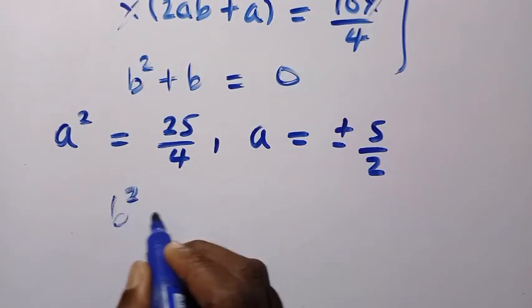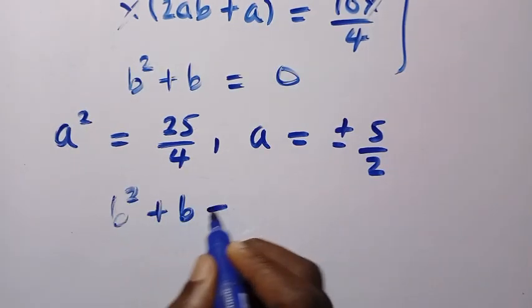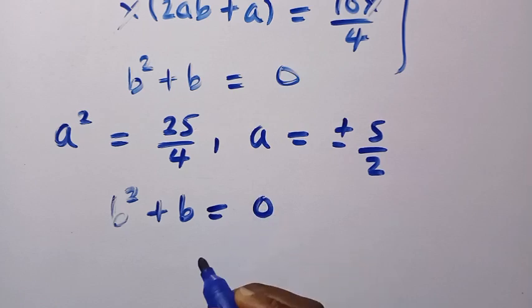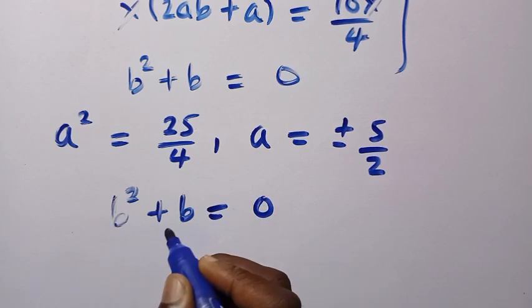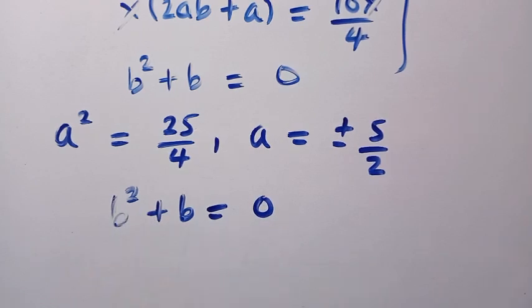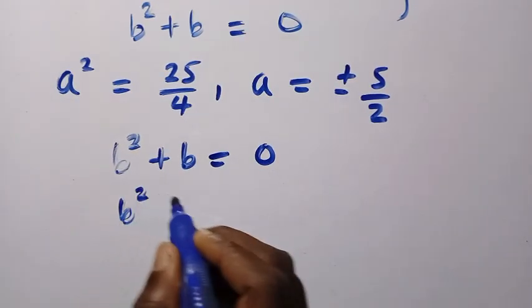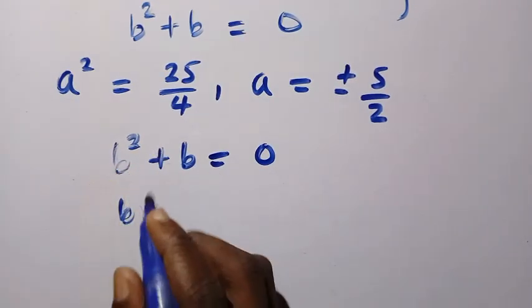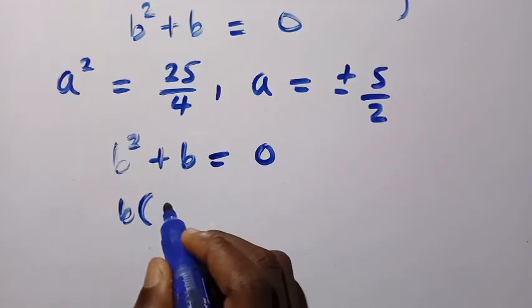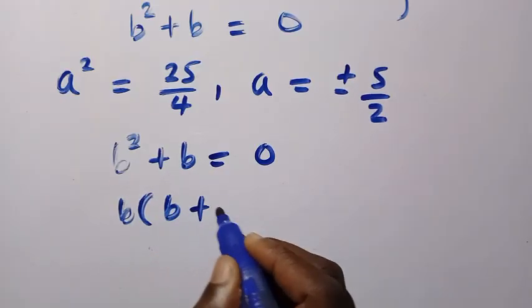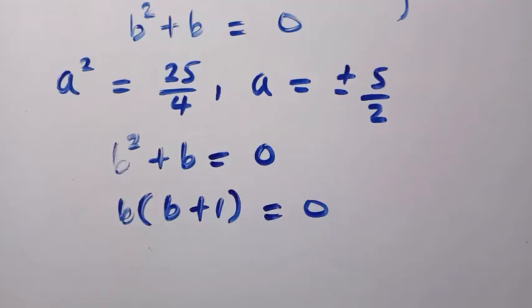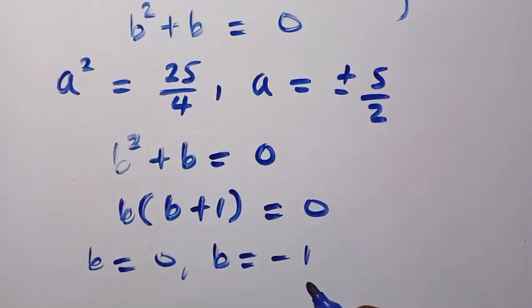By considering the last one, we have b squared plus b equals 0. We have to get two values of b by factorizing. So by factorizing, we have b squared. By taking out b, then we have b plus 1 equals 0. So if b plus 1 equals 0, this shows that our b here will be equals 0 and b will be equals minus 1.